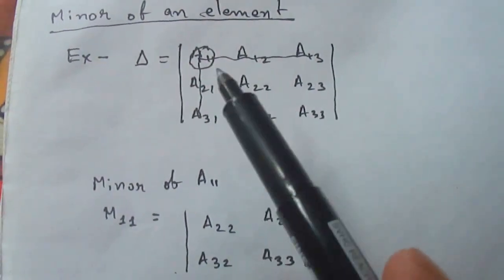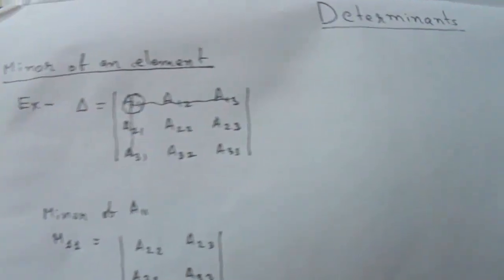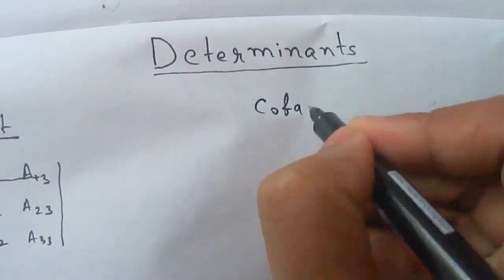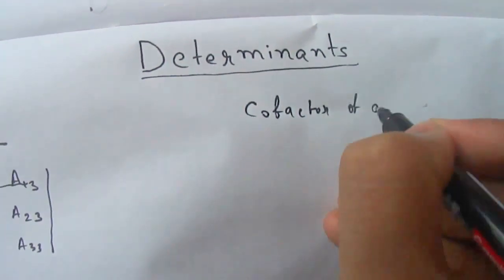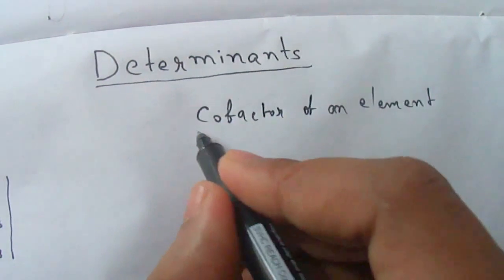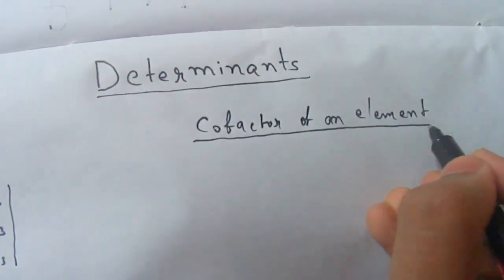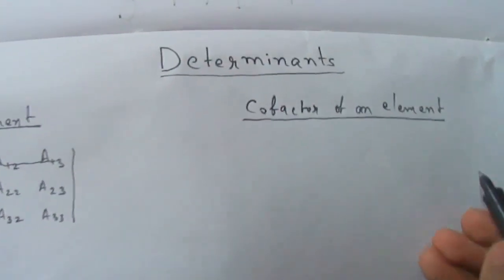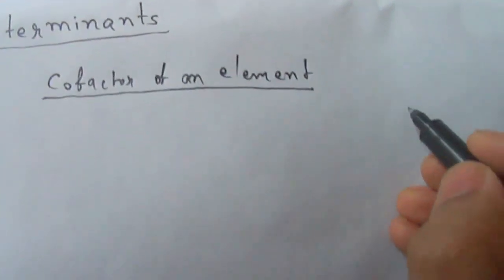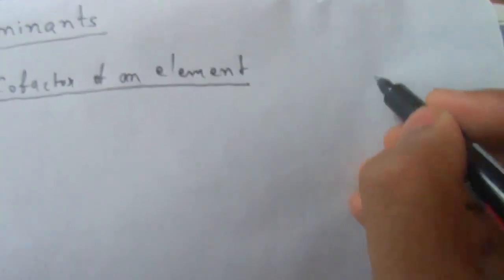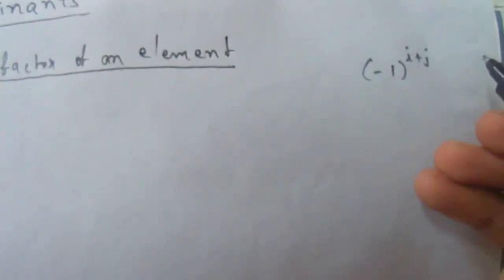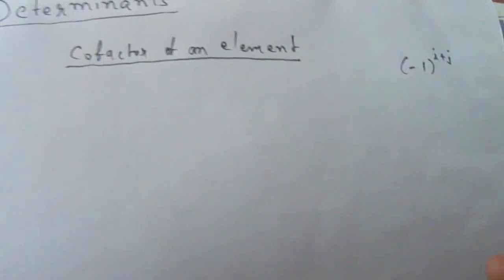Now let us learn about cofactors. The cofactor of an element is obtained by multiplying the minor of that element by (−1)^(i+j), where i and j are the row and column positions of the element. This is said to be the cofactor of that element.